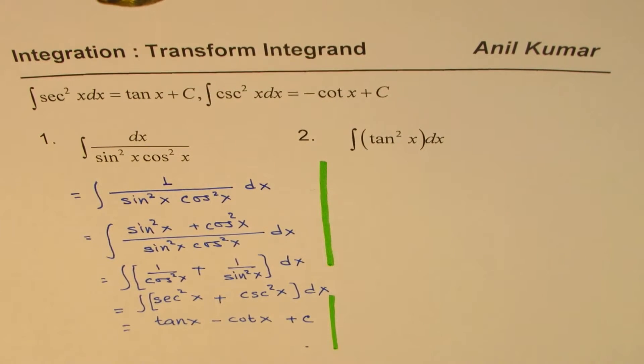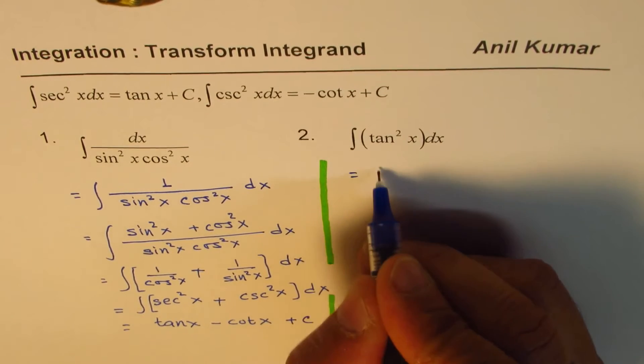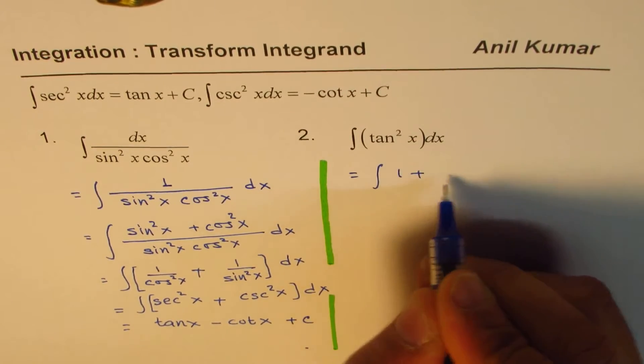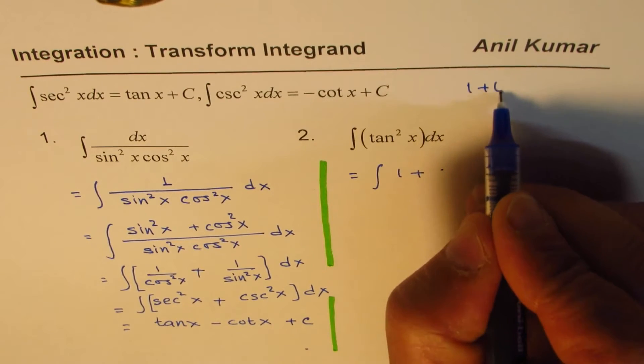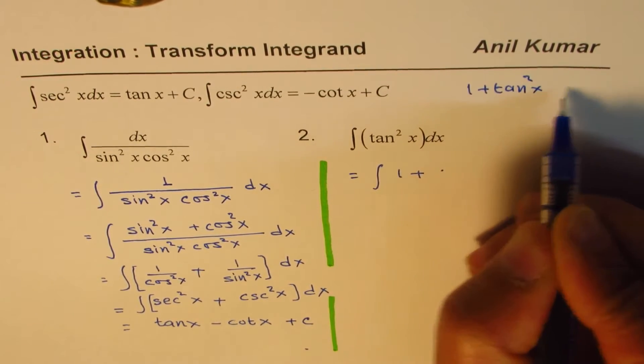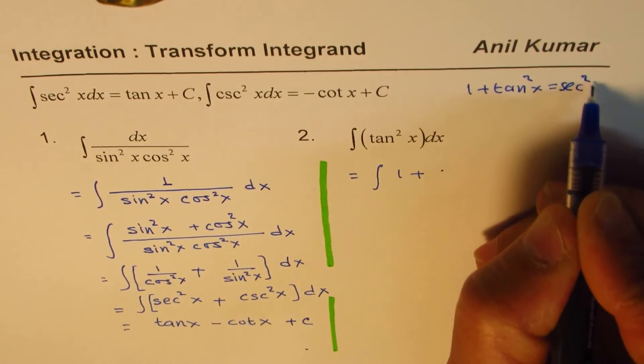Now let's do the next one. Tan square x. Tan square x is 1 plus, 1 plus tan square x equals to secant square x.